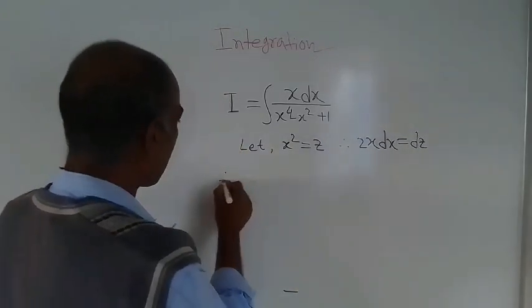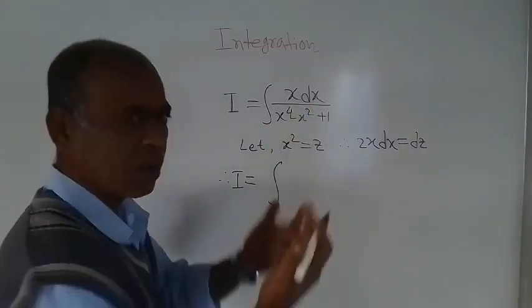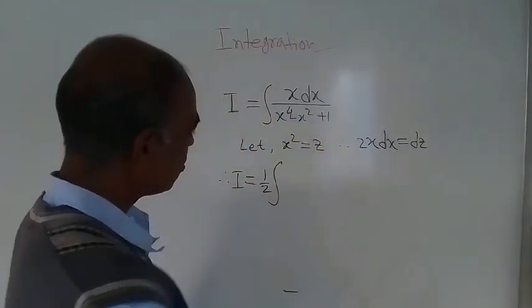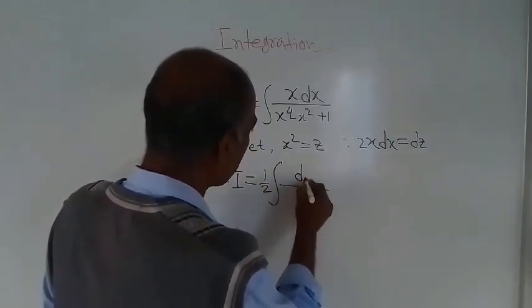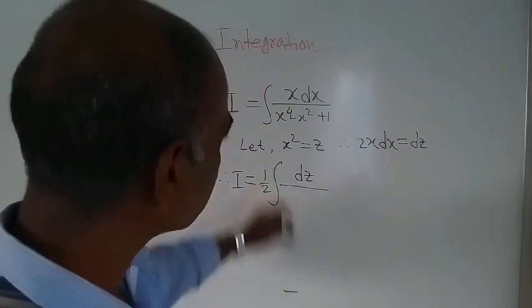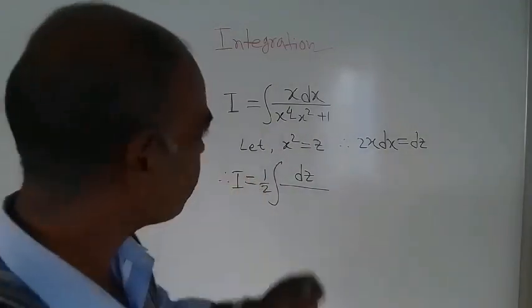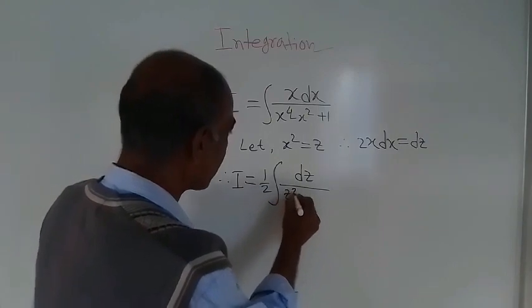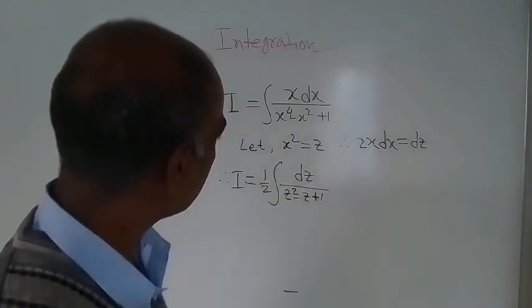Therefore, the given integrand I is equal to dz by 2. Half is a constant, so that can be taken outside the integrand. So here in the numerator, dz appears, and in the denominator, x to the power 4 is there, which equals z square. Similarly, this is z, and plus 1 is there.